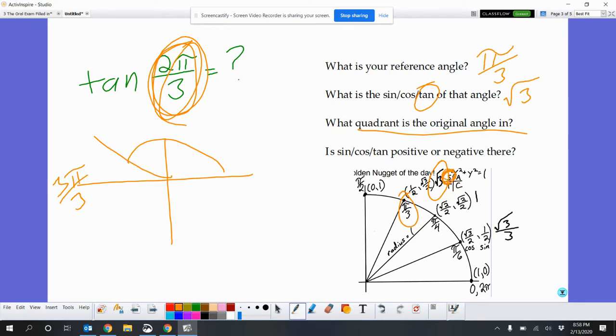And that quadrant, sine is the only thing that's positive. Everybody else is negative. And I'm dealing with tangents. So I'm definitely going to make this thing negative. And I get the square root of 3.